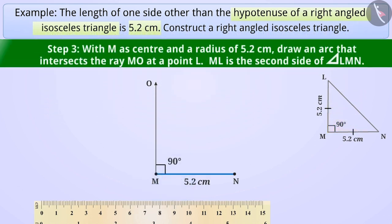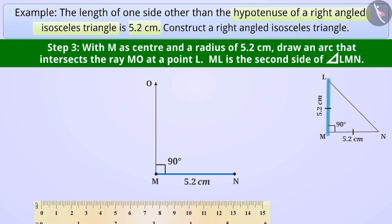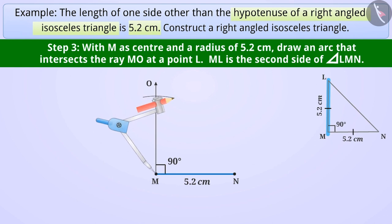Step 3. We know the length of the other side which measures 5.2cm. Therefore, we will open the compass for the required radius of 5.2cm. With M as centre and a radius of 5.2cm, we will draw an arc. It intersects the ray MO at a point L. ML is the second side of triangle LMN.